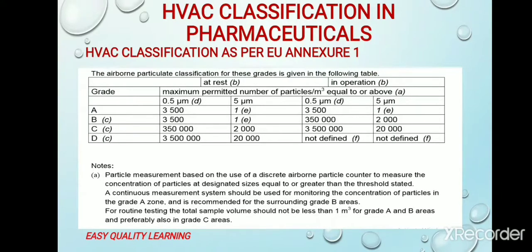EU Annexure 1 is specified for sterile dosage preparations. Here also, Classes A, B, C, and D are specified with the number of particles defined. The difference between Schedule M classification and European classification is that in European classification, one 5-micron particle per cubic meter is allowed in Class A and Class B, whereas in WHO classification, the number of 5-micron particles allowed in Class A is zero.